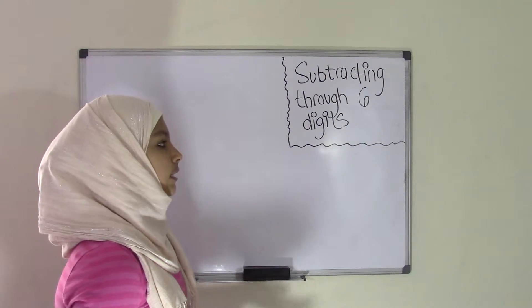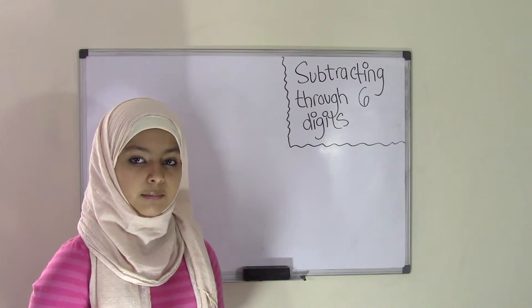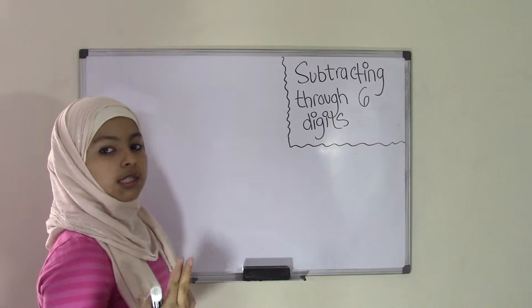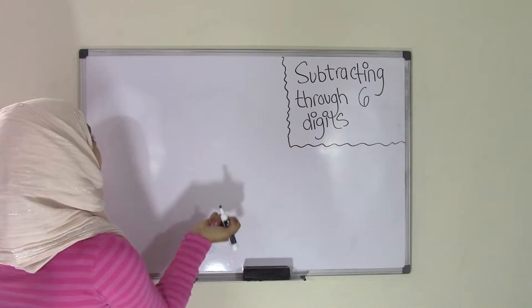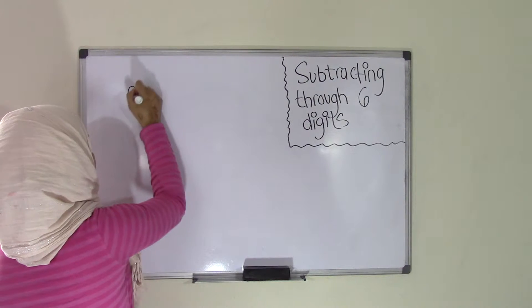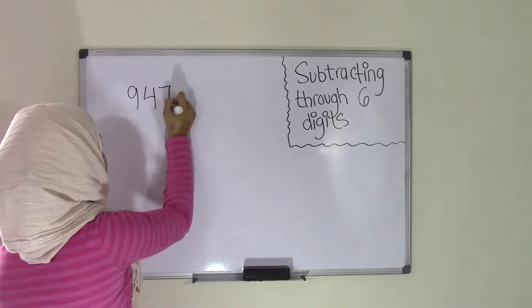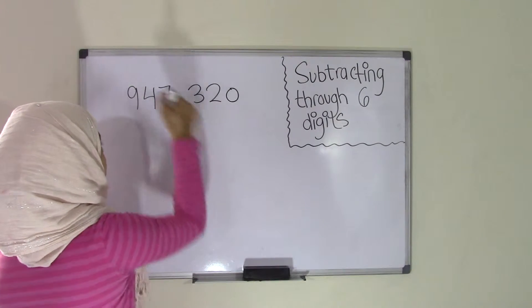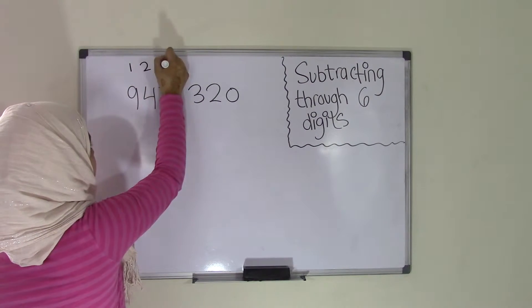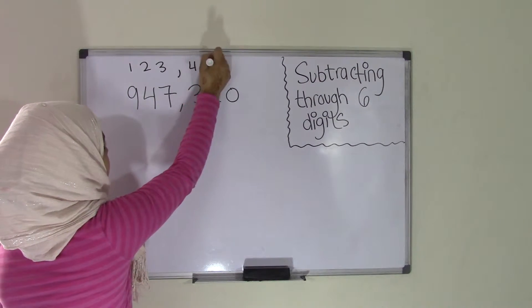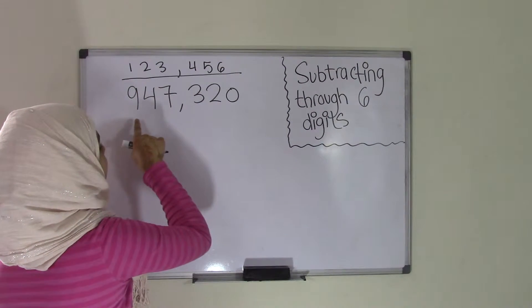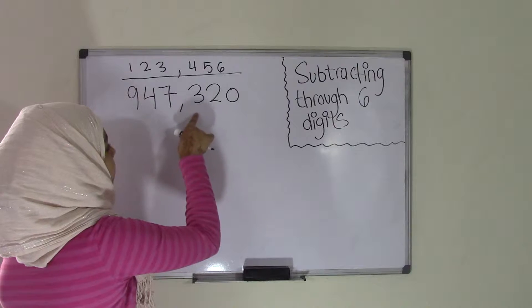Now since we're dealing with six digits, we're going to have two six-digit numbers and we're going to be subtracting them. So I'm going to go ahead and list two six-digit numbers up on the board. So my first six-digit number is 947,320. And these are six digits because 1, 2, 3, 4, 5, 6. So these are my digits up here.